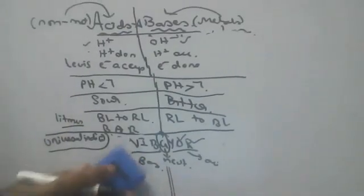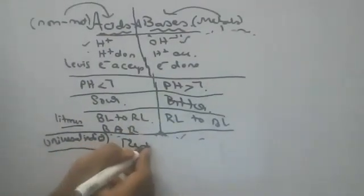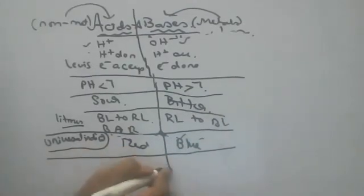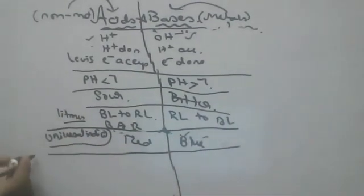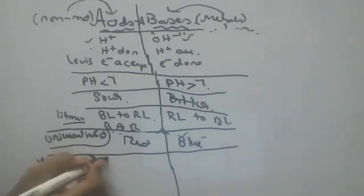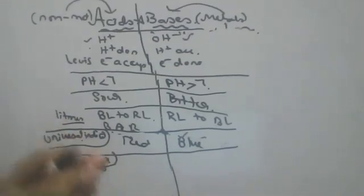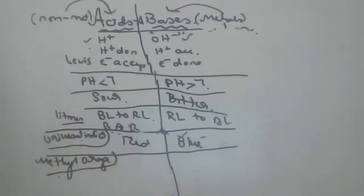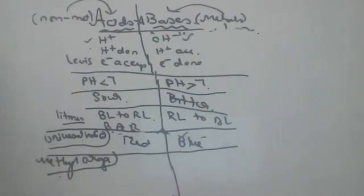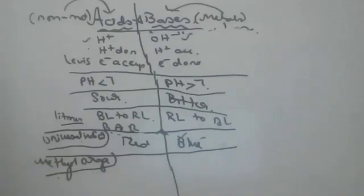On the whole, red color indicates acids and blue indicates bases in universal indicator. Indicators are substances which show different colors in acids and bases. Methyl orange is a type of indicator.